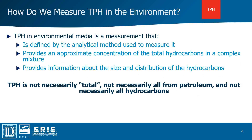Now that we understand the universe of compounds present in refined products, how do we collect TPH measurements in different environmental media? The answer lies in the TPH analytical method that is selected. I really want to stress this point, as the analytical method defines TPH and provides an approximate concentration of total hydrocarbons in the complex mixture, in addition to hydrocarbon size and distribution in the environment. Ironically, TPH is not necessarily total, not necessarily all from petroleum, and not necessarily all hydrocarbons.